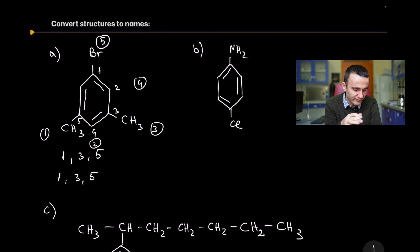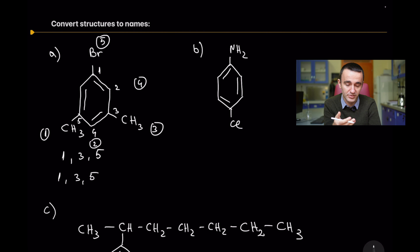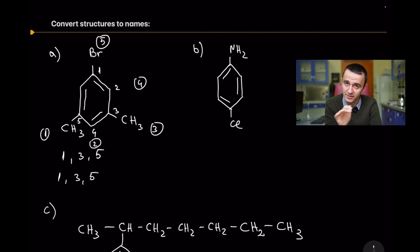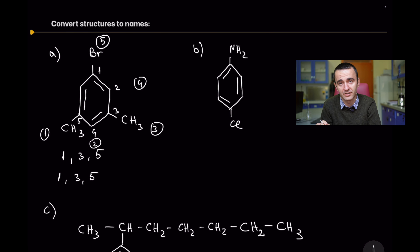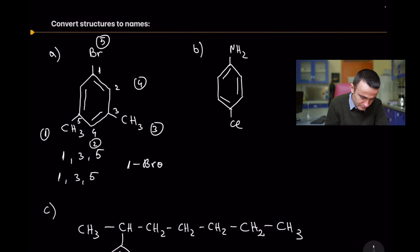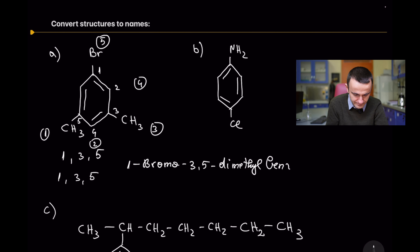When two counting directions give the same set of numbers, the substituent that comes first alphabetically gets the lowest possible number. If the lowest possible number is already determined and alphabetical order doesn't correspond, you respect the numbers first. When writing the name, however, you list the substituents in alphabetical order. So this compound is 1-bromo-3,5-dimethylbenzene.